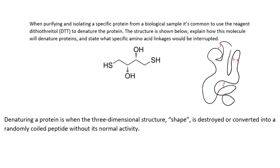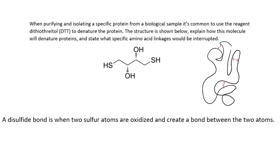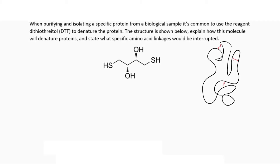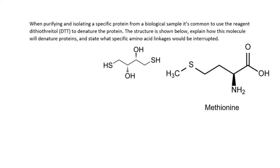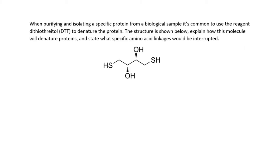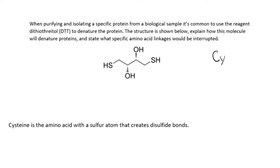How are disulfide bonds created, and which amino acids are involved? A disulfide bond is when two sulfur atoms are oxidized and create a bond between the two atoms. Methionine has sulfur but does not create disulfide bonds. Cysteine, on the other hand, has sulfur in its R group and is the amino acid that creates the disulfide bond.